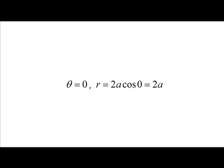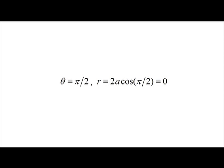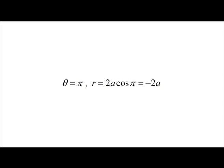We note that from the figure or from the equation, when theta is equal to pi by 2, r is equal to 2a·cos(pi/2) which is equal to 0, giving the point with Cartesian coordinates (0, 0). When theta is equal to pi, r is equal to 2a·cos(pi) which is equal to negative 2a, giving the point with polar coordinates (−2a, π); and this point in Cartesian coordinates is (2a, 0).